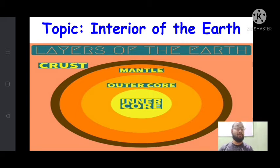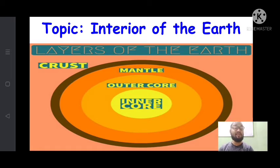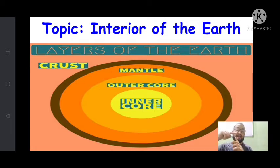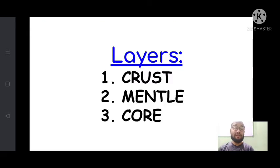First, we will go to the layers of the earth. There are basically three layers inside the earth. The first, topmost layer is the crust. The second layer is the mantle layer. The third and last layer is the core. So from top to bottom: crust, mantle, and core — these are the three layers of the earth.